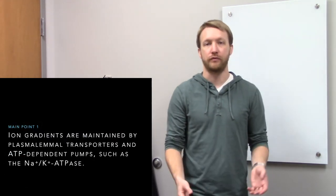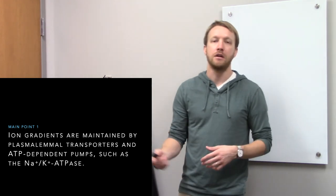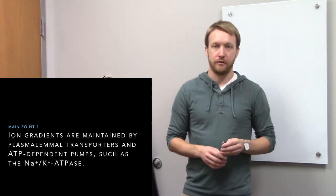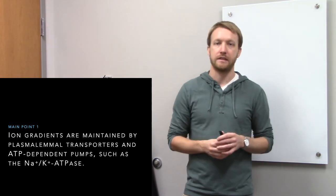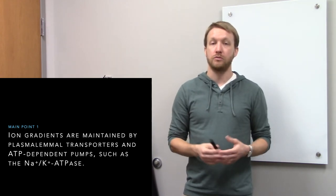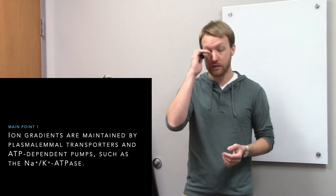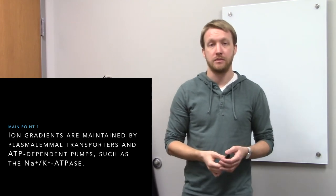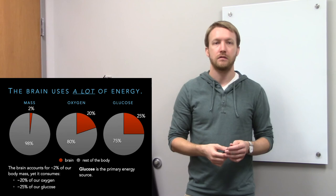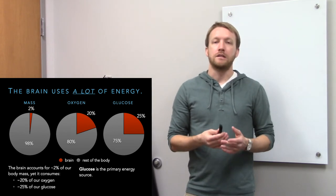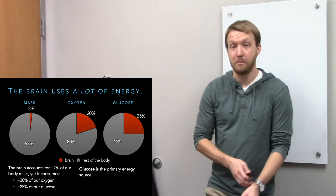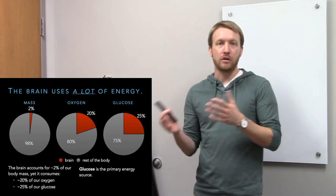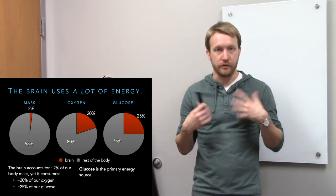Let's refresh ourselves on the ion gradients and how we maintain them with pumps. We have that ionic imbalance: lots of sodium and chloride outside, a lot of potassium inside. Pumps move ions against their concentration gradient to establish that imbalance. If you're only going to know one, know the sodium-potassium ATPase. Now the brain is going to use a whole lot of energy, especially relative to its mass — even though it's only about 2% of the mass, it uses about a fifth or a quarter of the oxygen and glucose moving throughout our body.